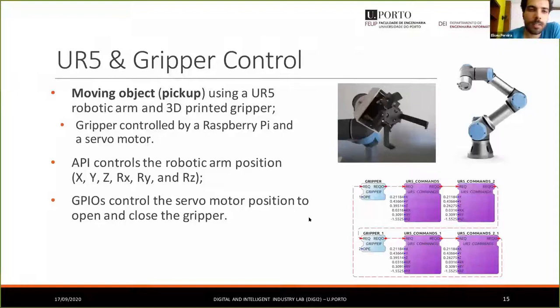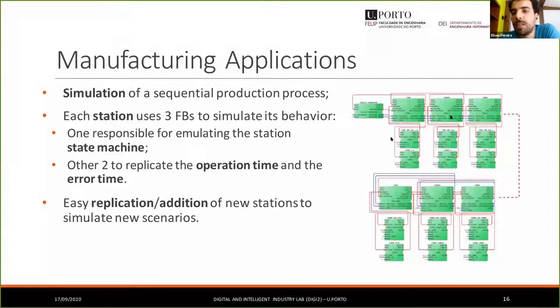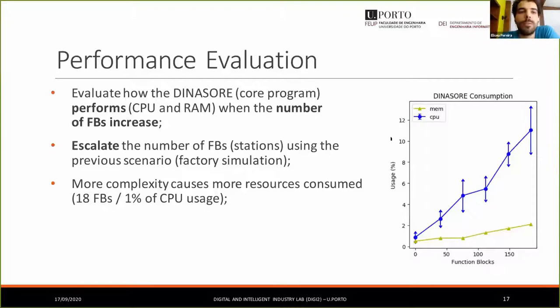The next scenario is related to manufacturing applications. In this particular case, we want to simulate a production process. Each station of the process contains three different function blocks, and the products are simulated to pass through each station and be processed in each station. This example permits us to validate the scalability of DINOSAUR, and we use that example to do the performance evaluation by increasing the number of function blocks to see how performance evolves.